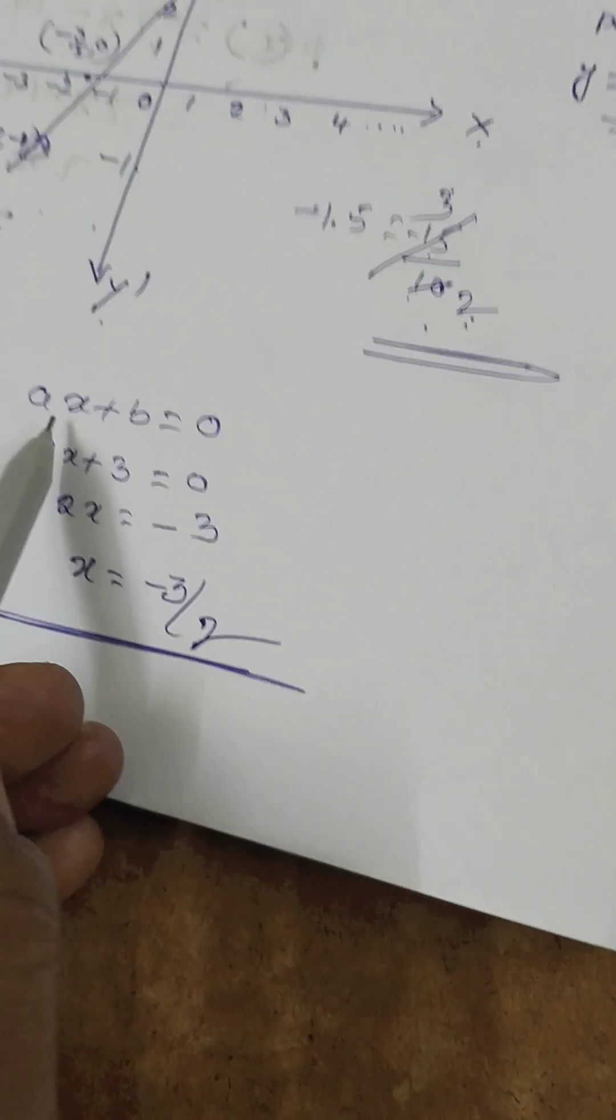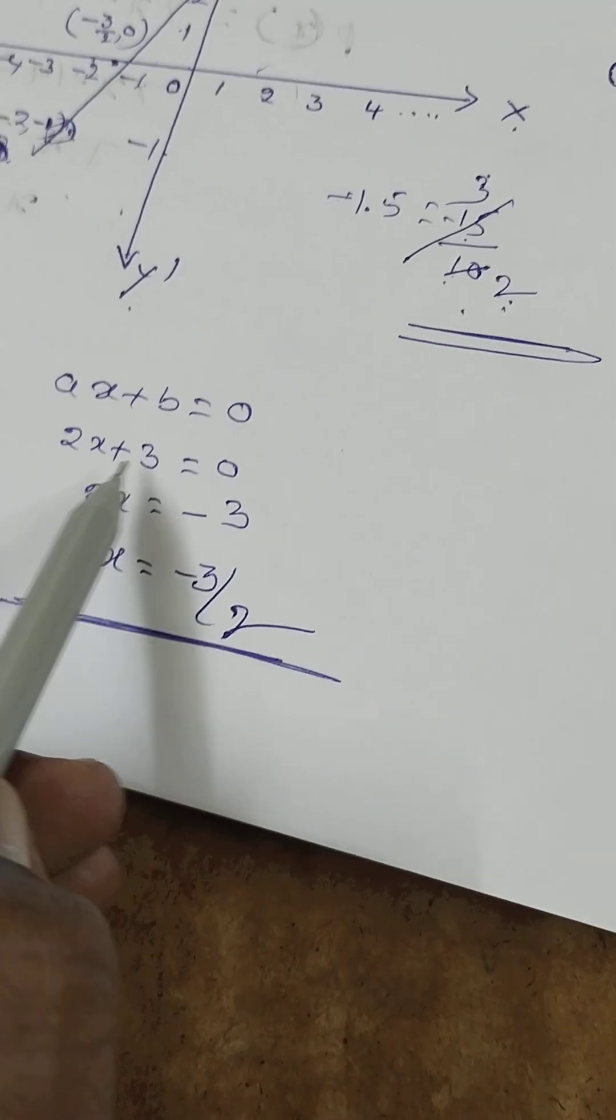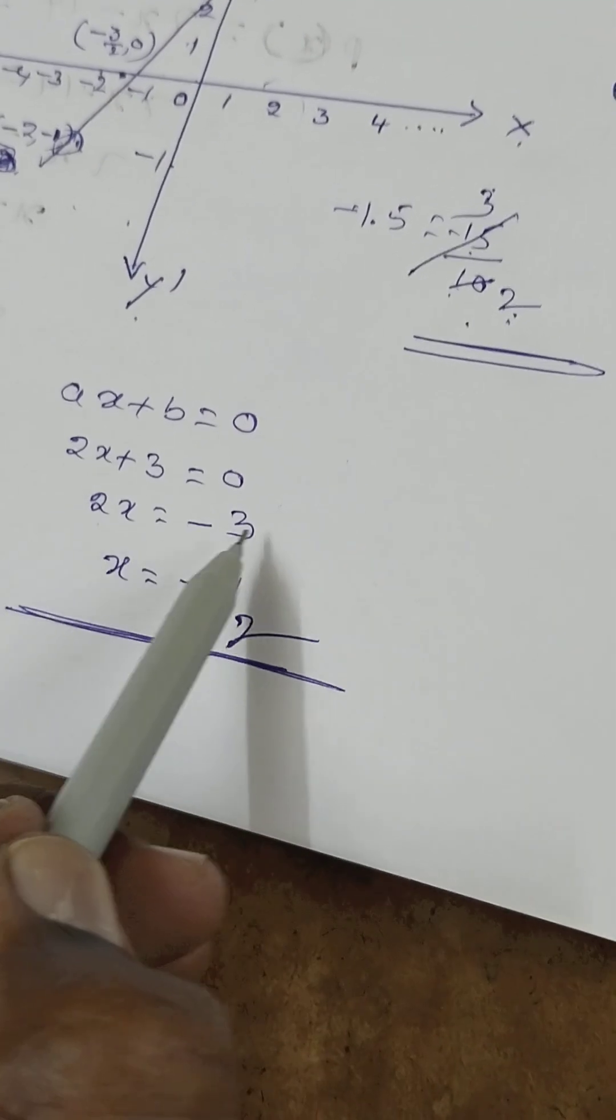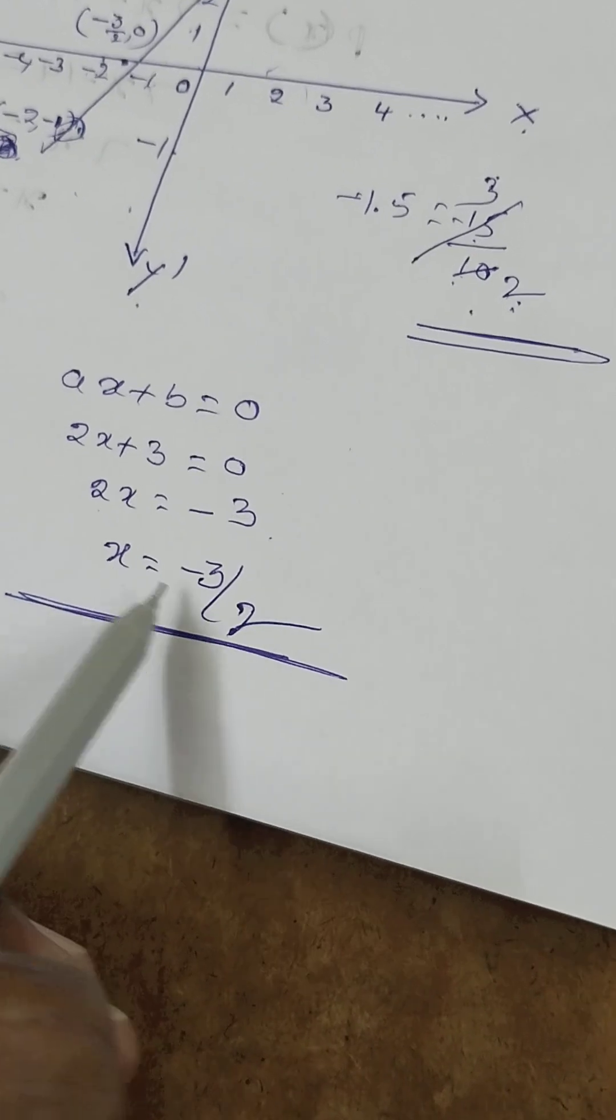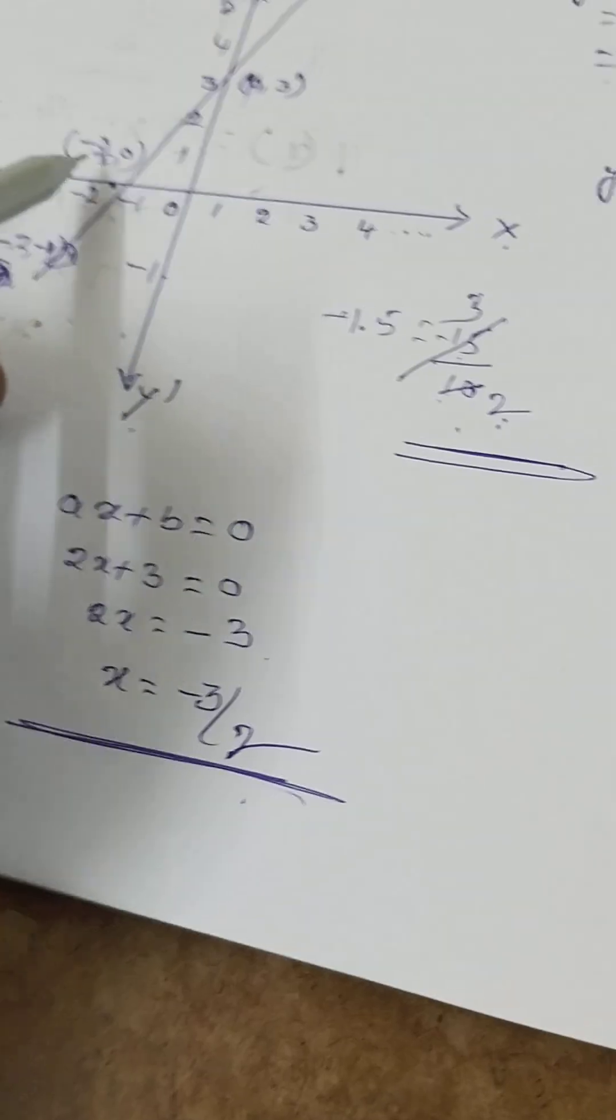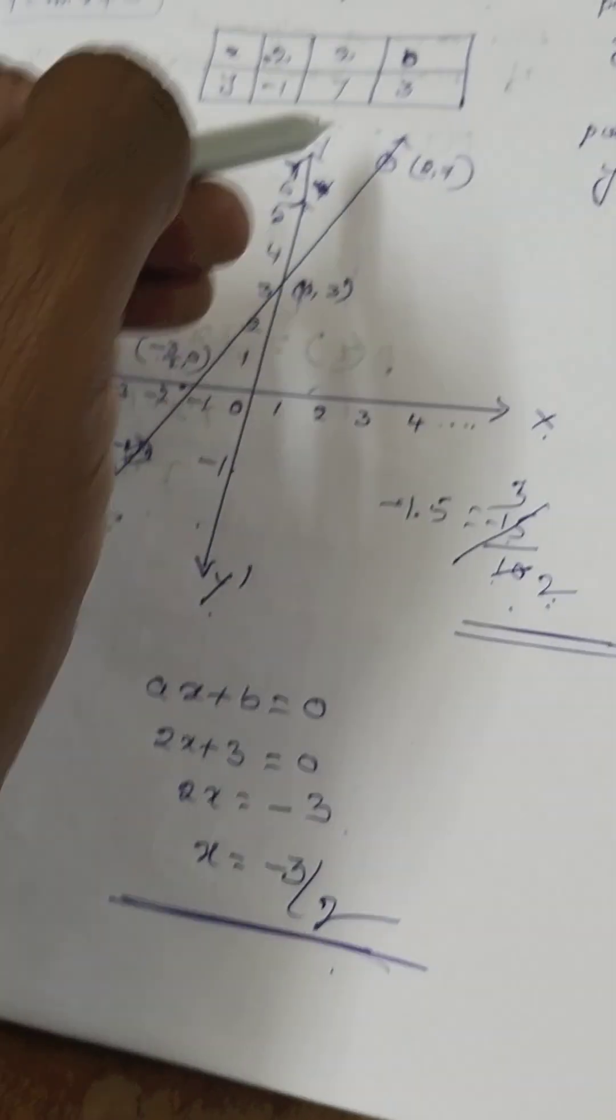The value where 2x plus 3 is equal to 0 gives x is equal to minus 3 by 2. This is where we see minus 3 by 2 in the graphical representation.